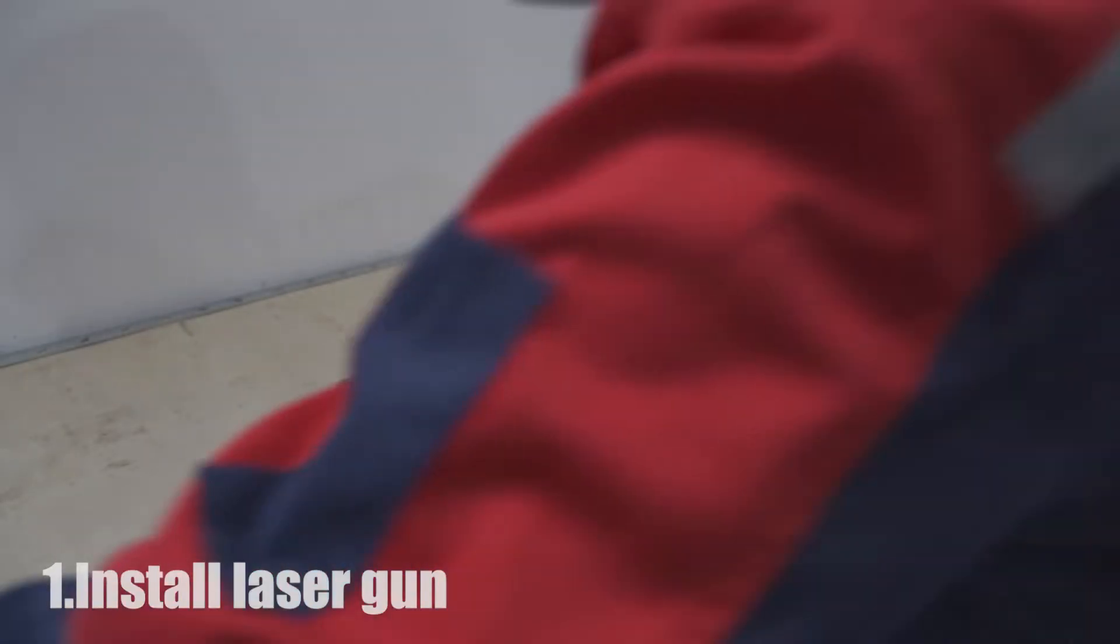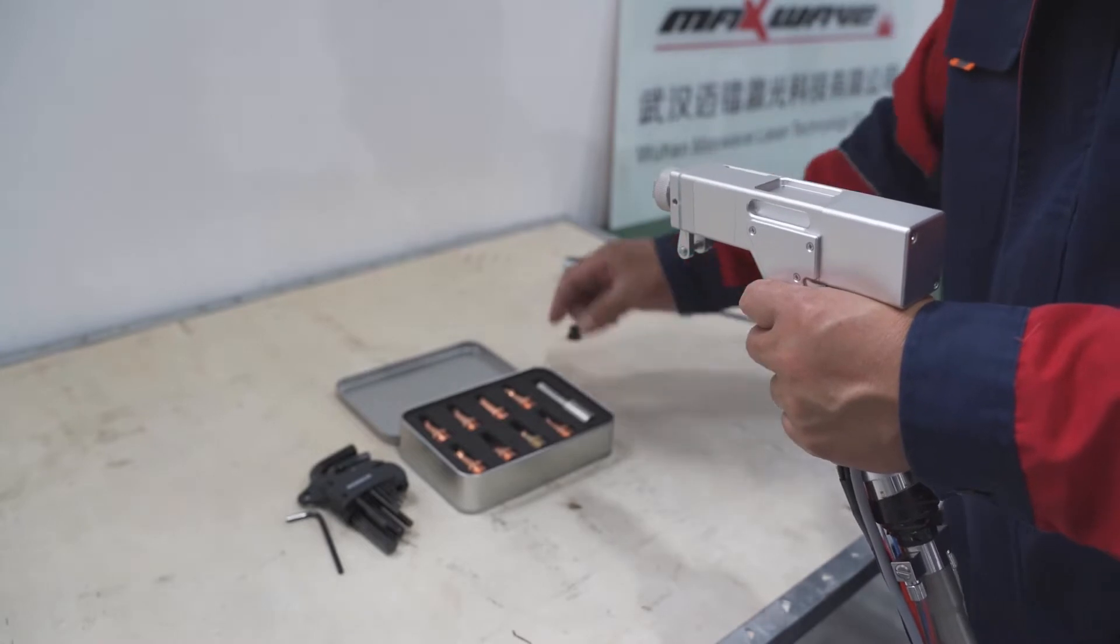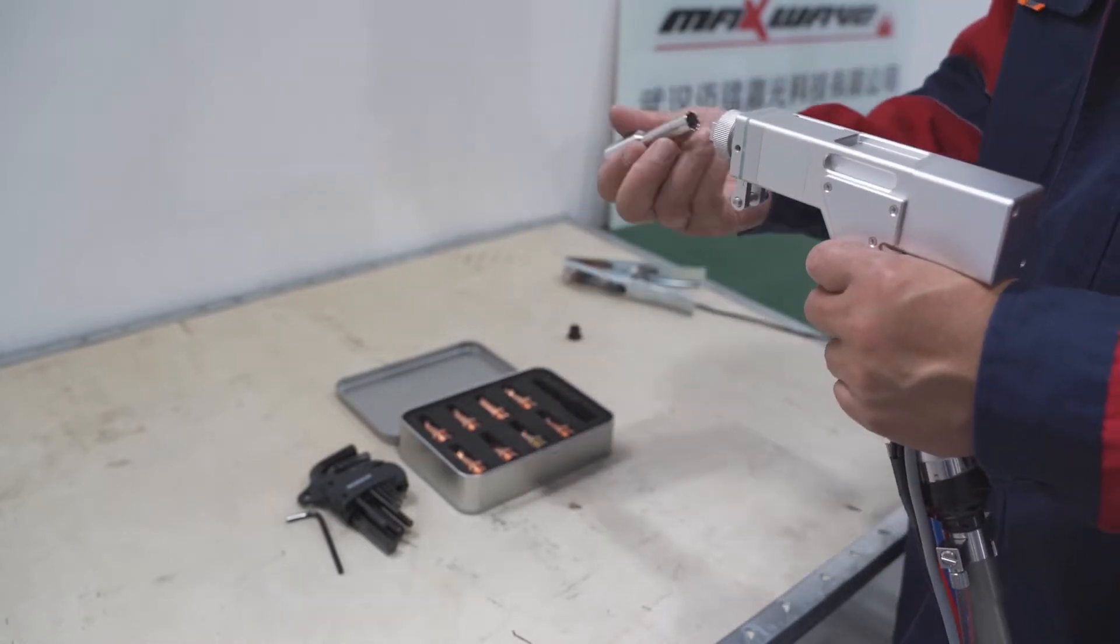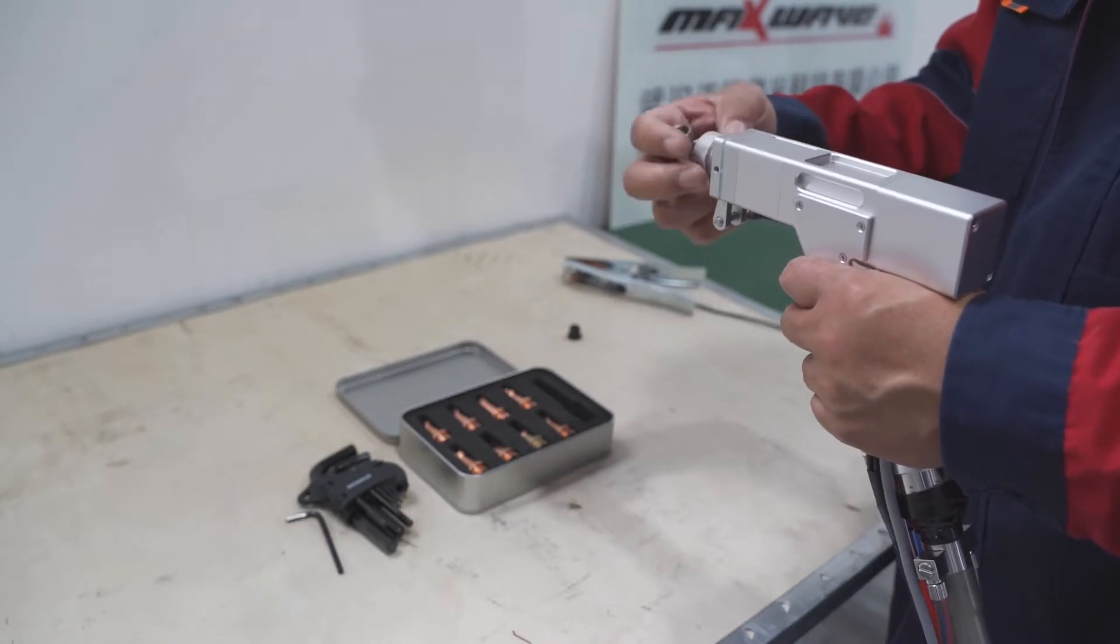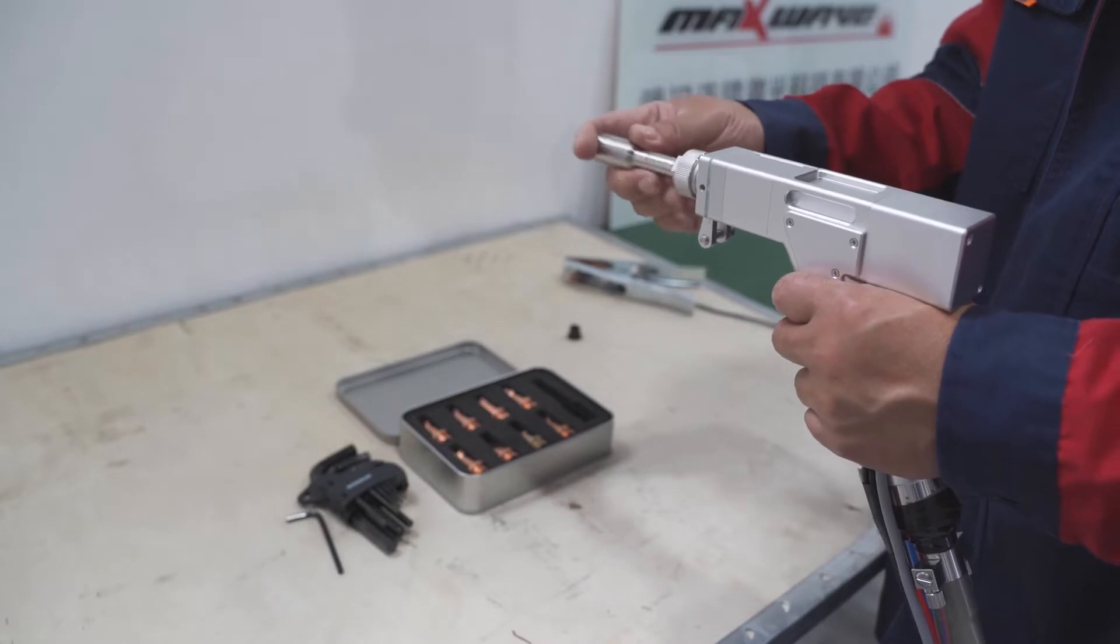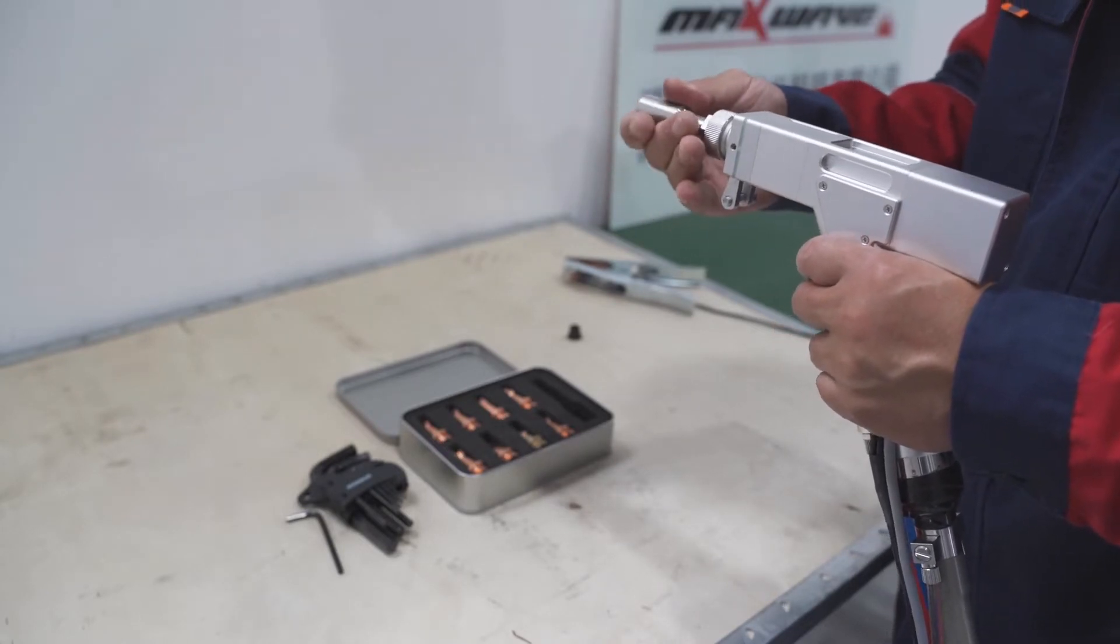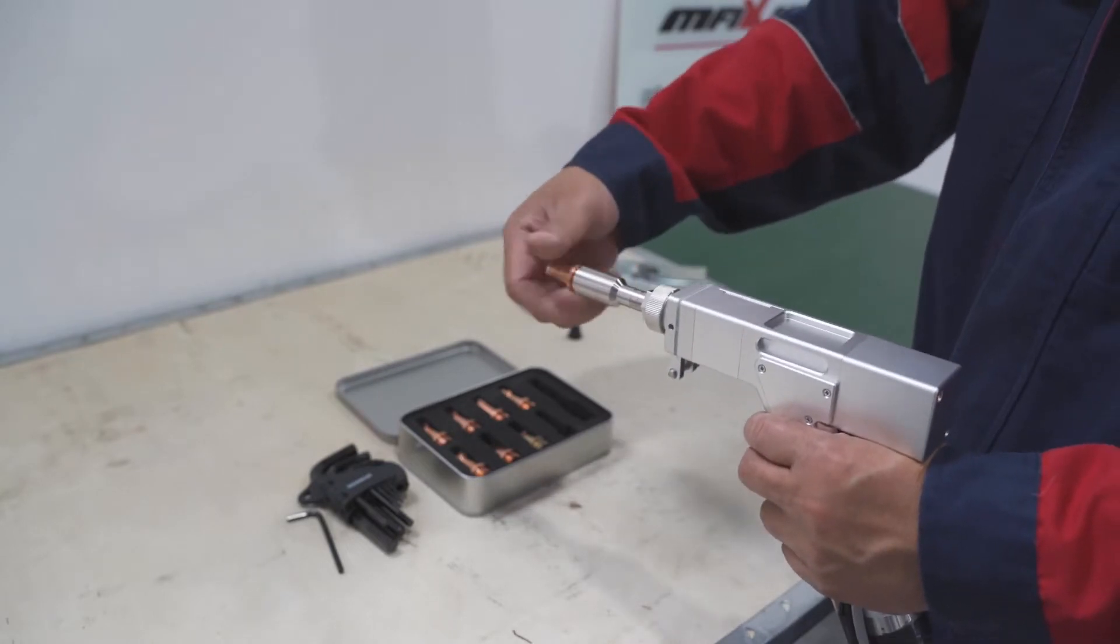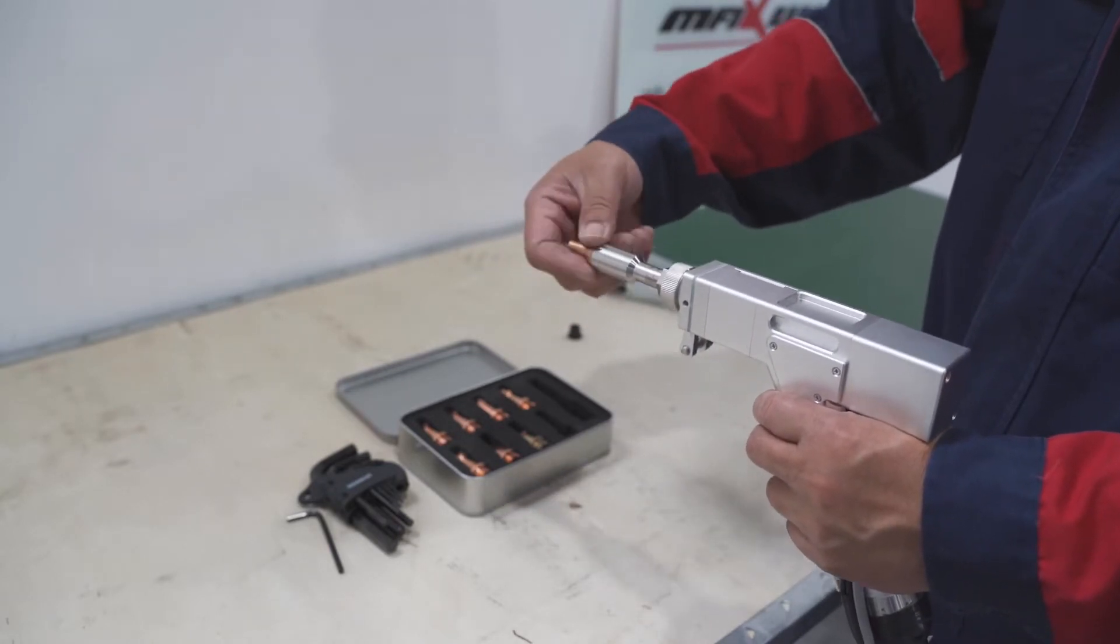First step, we will introduce how to install the laser gun. Connect the metal tube inside the laser gun, then install the nozzle with the metal tube.